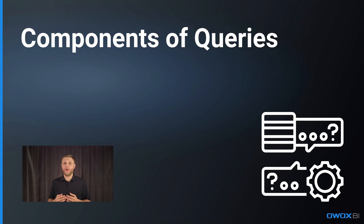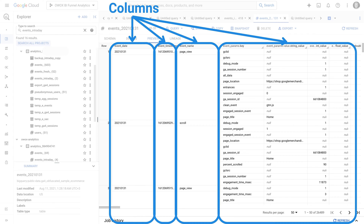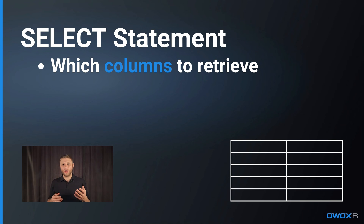Now that you understand what a query is, let's break down the essential commands that make up a SQL query — the basic parts of the conversation with your database. Number one: SELECT. This is where you specify what data you want to see. It's like choosing a specific type of information from a menu — you tell the database exactly which columns of data you are interested in.